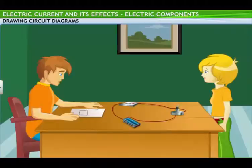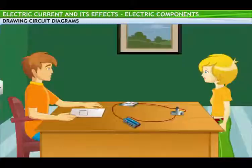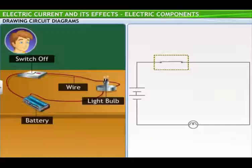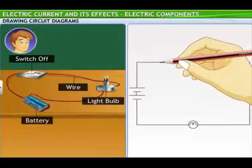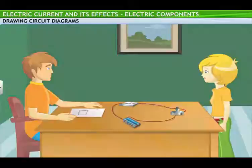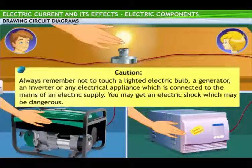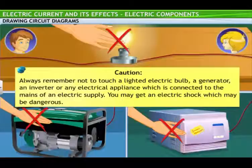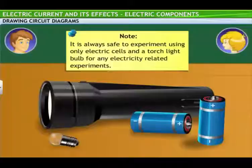The circuit diagram is almost correct. You have just made one small mistake. Can you spot the error yourself? Oh, I drew the switch in the on position, whereas in the circuit, the switch is in the off position. Let me correct it. Yes, now it's perfect. A word of caution — always remember not to touch a lighted electric bulb, a generator, an inverter, or any electrical appliance that is connected to the mains of an electric supply. You may get an electric shock, which may be dangerous. It is always safe to experiment using only electric cells and a torch light bulb for any activity related to electricity.